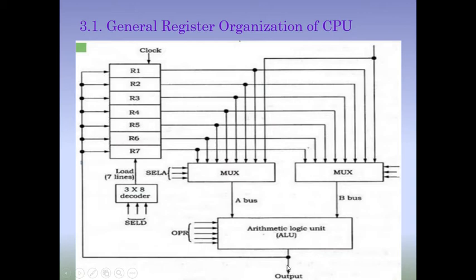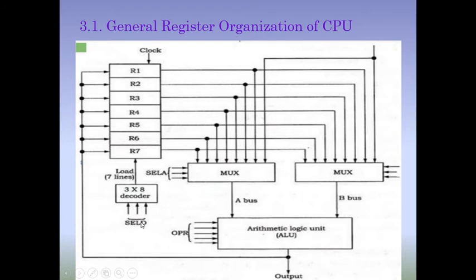After the operation is performed, the output will be stored in any register. We add a 3-to-8 decoder with 3 inputs called Select Destination. We decide with these 3 bits which register the output result will be stored in. For example, if the bit value is 0,0,0 it will be stored in register 0; if 0,0,1 it is stored in register 1; and if 1,1,1 it is stored in register 7. This decoder selects the destination register once we have the result. This is how all registers are connected with Bus A and Bus B, with selection inputs for operations and Select Destination control signals.